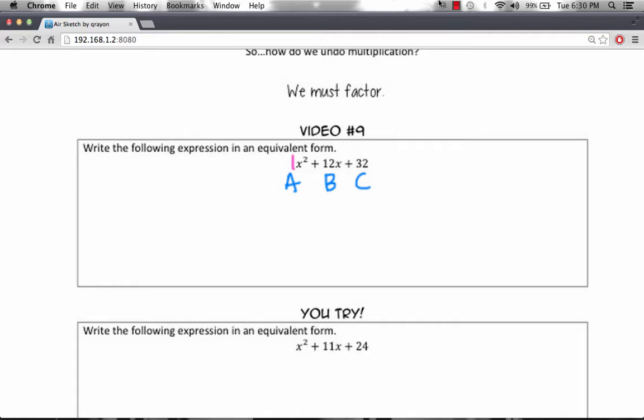Now what we're going to do is factor this expression. We're going to write it in another way by factoring. To start, the first thing we want to do is multiply our a and c terms together. So in this case we have 1 times 32, which gives us 32.